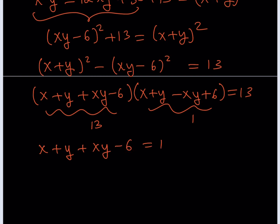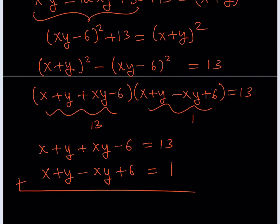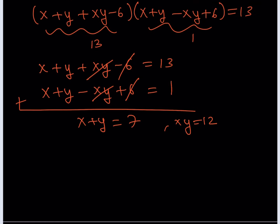Taking the case 13 and 1: we get two equations. Adding them eliminates xy and the 6 cancels out, giving 2(x + y) = 14, so x + y = 7. Plugging back in gives xy = 12. From this system, 4 and 3 are obviously solutions, so (4, 3) and (3, 4) both satisfy the equation.